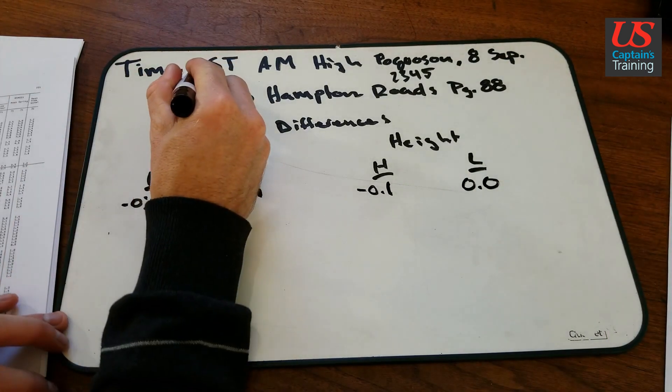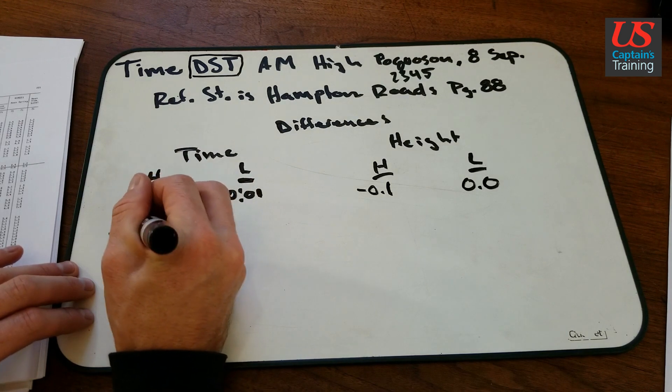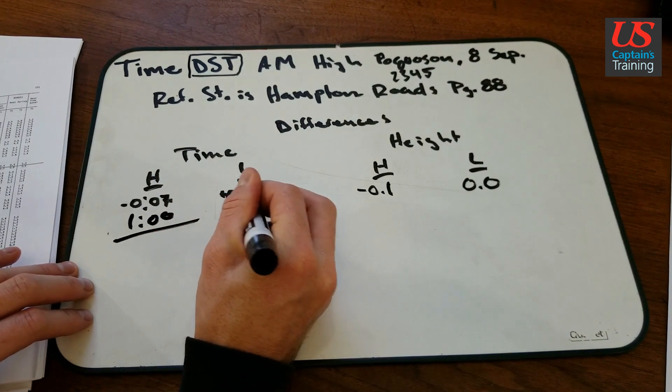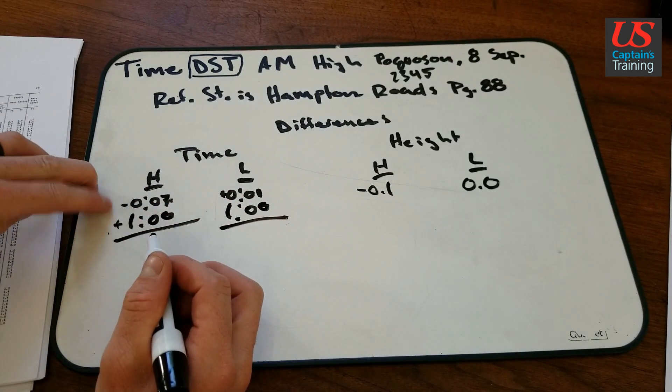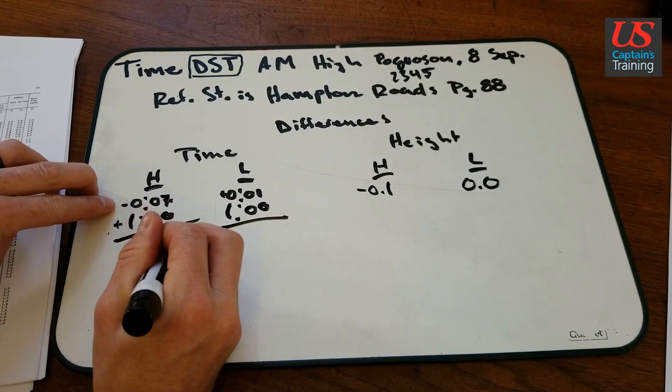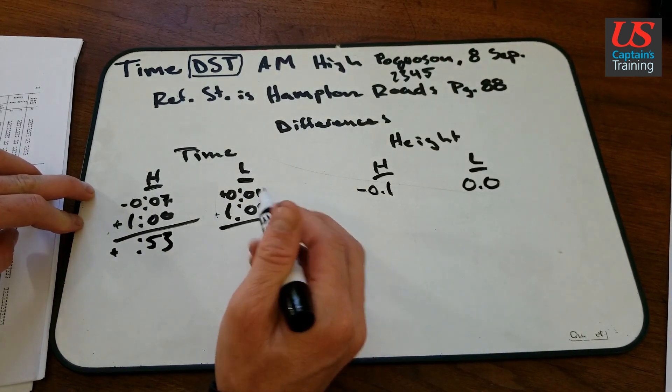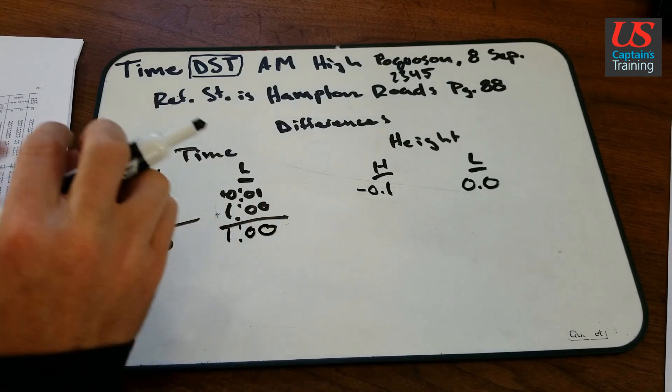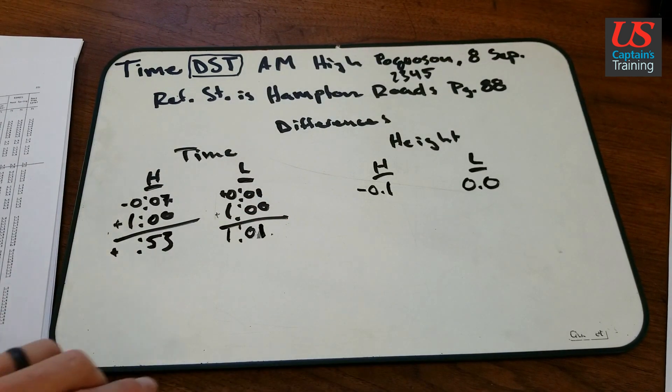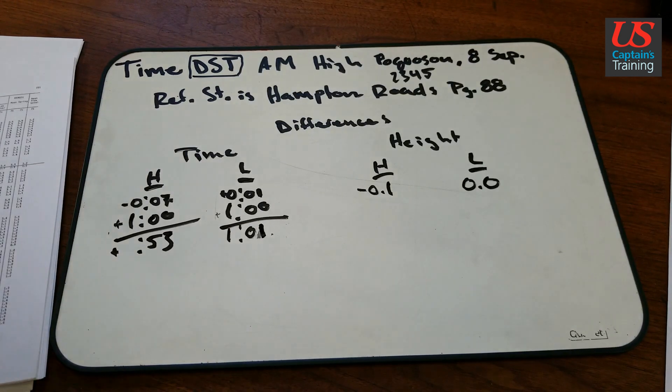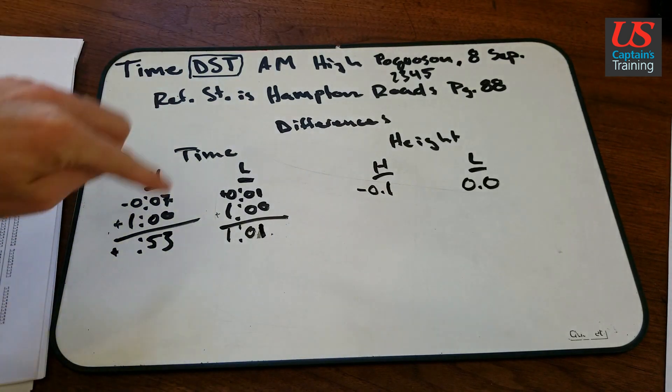Now let's account for daylight savings time. If it's daylight savings, add an hour. So time difference, we're going to add an hour here, add an hour here. So positive 1 hour minus 7 minutes is 53 minutes. So positive 53 minutes, positive 1 minute plus an hour is 1 hour and 1 minute. And now the height is good. So let's look at the problem again. Time DST AM high Pocosin River. Good, we have all this.